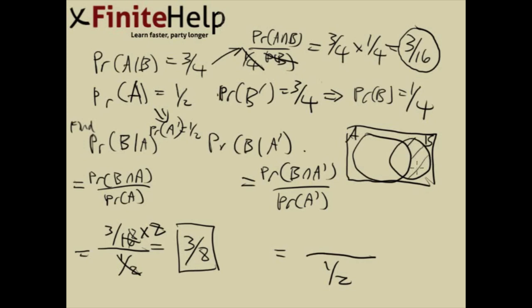And we want to know this area. This is not given, but we do know that A intersect B, this place here, is three-sixteenths. And we also know that probability of B is one-fourth.